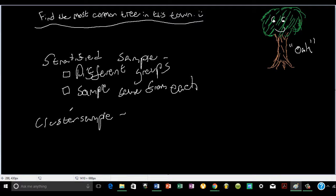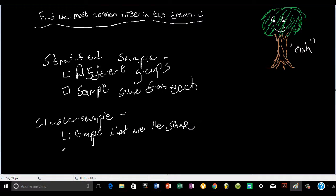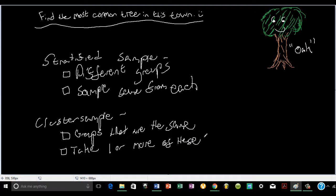But if we try our best to do it, if we take all the members from that group and use that as our sample, that would be pretty darn close. It would be like taking a random sample from the population. These are going to be groups that are the same, and we're going to take one or more of these groups as our sample. Alright, let's see an example.